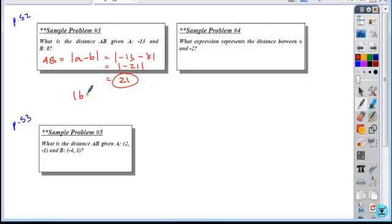And now, again, it doesn't matter. We could have gone absolute value of b minus a. 8 minus a negative 13 would have yielded the same value. 8 plus 13 is still 21. Absolute value of 21 stays the same. So again, it doesn't matter which form you use. Either one's okay.